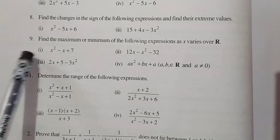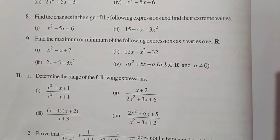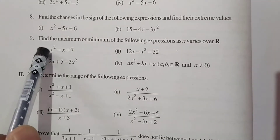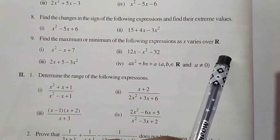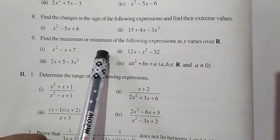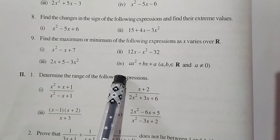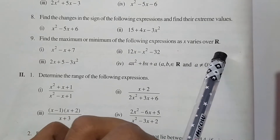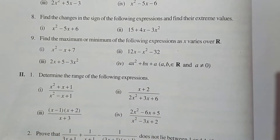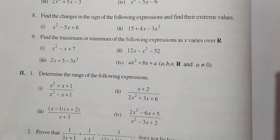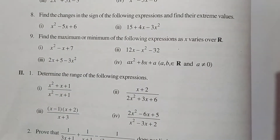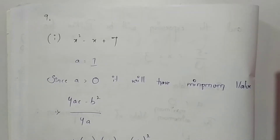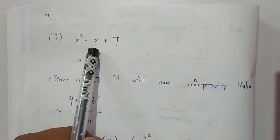Hello guys, in this video we will solve the ninth question. The ninth question says to find the maximum or minimum of the following expressions as x varies over R, where R is the real numbers. So we need to find the maximum or minimum value. The first expression is x² - x + 7.